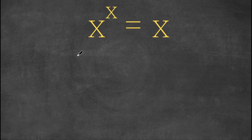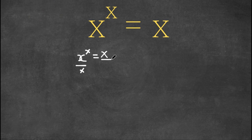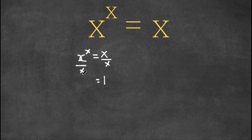What I'm first going to do is divide by x on both sides. So we have x to the power of x equals x, and if I divide by x on both sides, on the right side, x divided by x is simply 1 because anything divided by itself is 1. Now on the left-hand side, we have x to the power of x divided by x, and x in the denominator can be written as x to the power of 1.